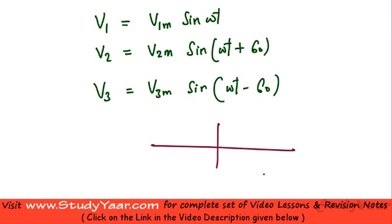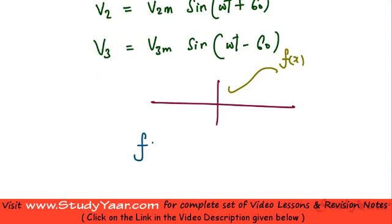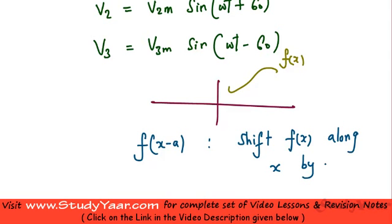And if now you want to trace f of x minus a, then all you have to do is you have to shift your fx along x by a distance of a. So if you want to trace f of x minus a, then all you have to do is just shift your fx by a distance of a along x.